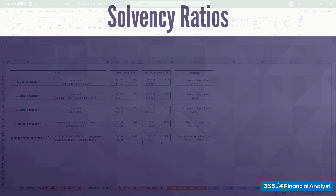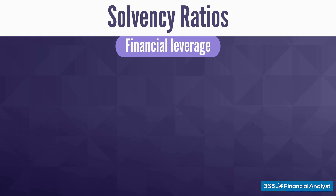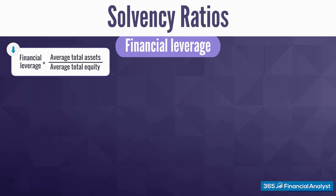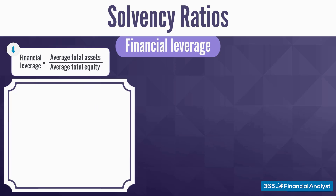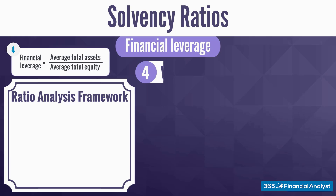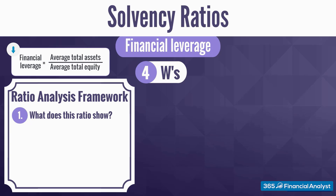Lastly, we will look into another widely known ratio: Financial Leverage. We calculate it by dividing the average total assets by the average total equity of a company. Put simply, the Financial Leverage ratio is an indicator of the use of debt financing. Although you do not see the word 'debt' in the formula, it is recognised by inference.